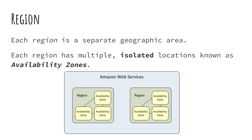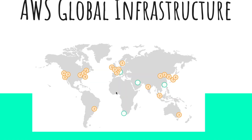Let's go back to the picture one more time. The number you see inside each circle is how many availability zones are present in that region. In this region right here, six availability zones are present. I can say that this is US-East-1 because US-East-1 has the highest number of availability zones.